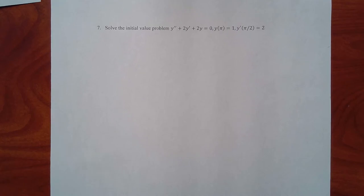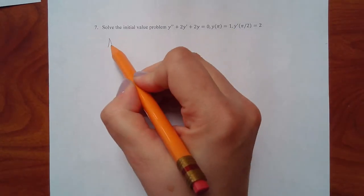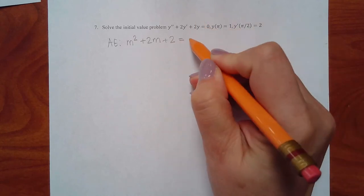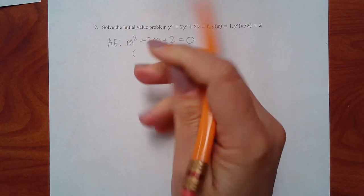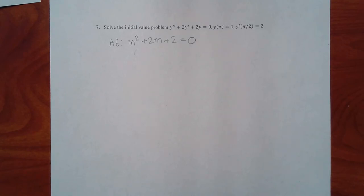Problem seven: is this constant coefficient or Cauchy-Euler? No x's at all — that's a dead giveaway for constant coefficients. The auxiliary equation is m squared plus 2m plus 2. Trying to factor: the only factors of 2 are 2 and 1, which never add to give 2. So use the quadratic formula: m equals negative b plus or minus square root of b squared minus 4ac over 2a.